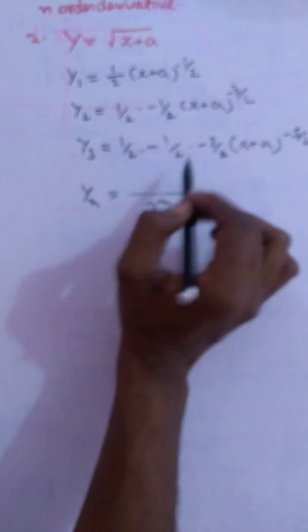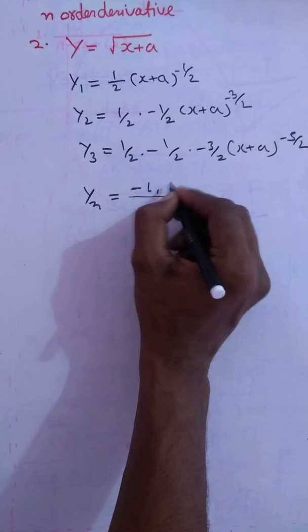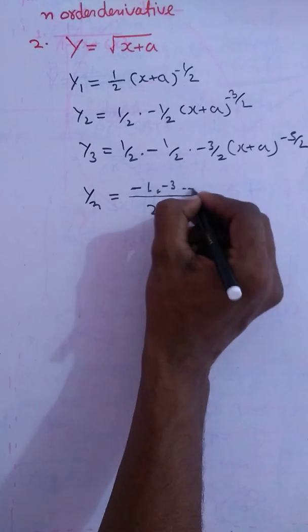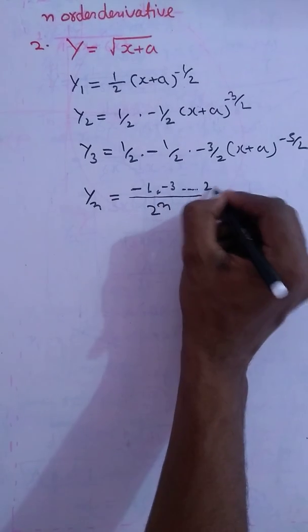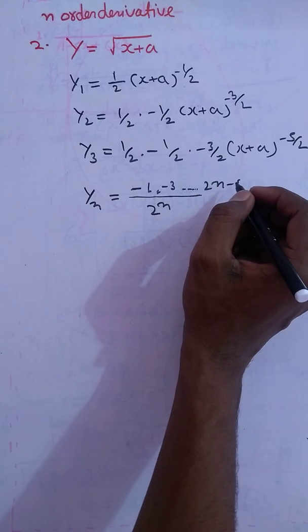And we are watching minus 1, minus 3. In y2 we get minus 1, in y3 we get minus 3, so in yn we will get 2n minus 1, because it is odd. Oh no, let's check that.